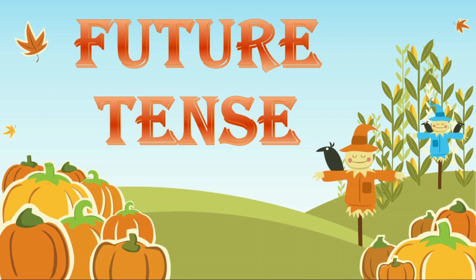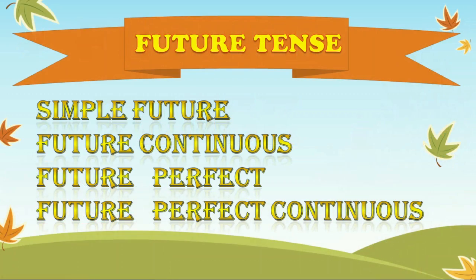Future tense is a verb tense used to talk about things that haven't happened yet. We use future tense to talk about an action or condition that will begin and end in the future. Future tense is further categorized into four forms: simple future, future continuous, future perfect, and future perfect continuous.